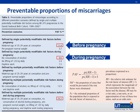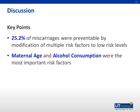Among single risk factors, the highest proportion of miscarriages were preventable if all women conceived at 25 to 29 years of age. Alcohol consumption was the most important risk factor during pregnancy itself. Combining all potentially modifiable risk factors — maternal age of 25 to 29 years at conception, no alcohol consumption during pregnancy, pre-pregnant normal weight, no daily lifting of more than 20 kg, and daytime work during pregnancy — approximately 25% of miscarriages were preventable, meaning one in four miscarriages are potentially preventable.